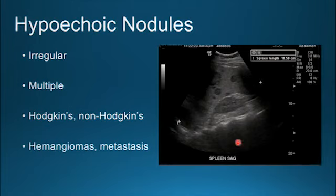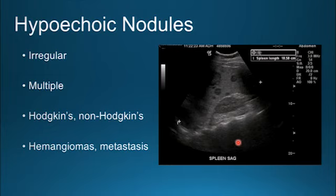Hypoechoic nodules can appear irregular and multiple. They can be formed because of an infiltrative process such as Hodgkin's or non-Hodgkin's lymphoma, perhaps a process of metastasis, and they can even present as hemangiomas.